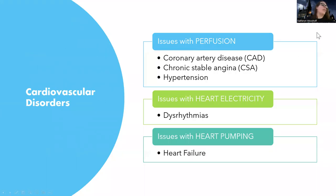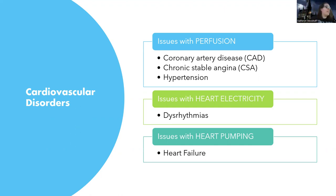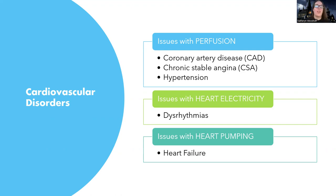We're getting into different cardiac issues. The next disorder this lecture will cover is CAD, or coronary artery disease. Disease processes get an acronym because they're cool as part of the cardiac fraternity. We have CAD, we also have CSA which is chronic stable angina - that's the next lecture - and then hypertension, and soon to come are dysrhythmias and then heart failure.